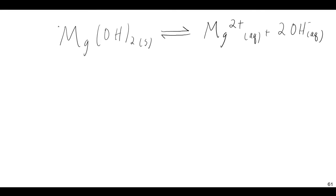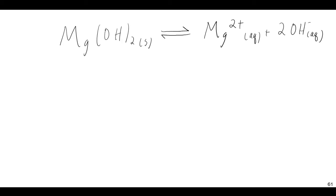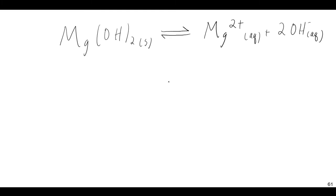How can we affect the amount of magnesium hydroxide solid that goes to the right and dissolves and becomes aqueous? Well, if we think back to Le Chatelier's principle — if there was a way to remove product, the reaction shifts to fill that void. So if you remove some OH⁻, the reaction will shift to the right, meaning more of the solid goes into the solution.